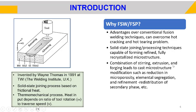FSW also offers a combination of material flow, stirring, extrusion, and forging which leads to a refinement of the cast microstructure. It can eliminate segregation and porosity, and can uniformly distribute any secondary phases. These are some of the important aspects we are going to see as part of this lecture.